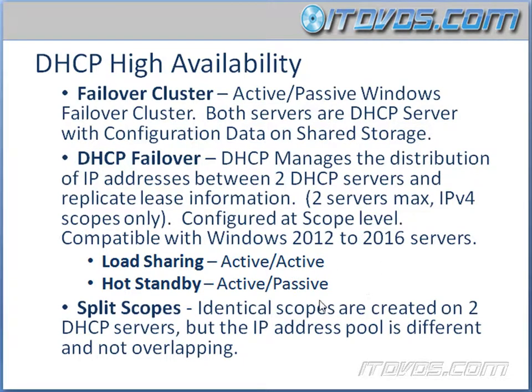The third option is split scopes, where identical scopes are created on two DHCP servers but the IP address pool is different and non-overlapping. There's a wizard to set this up; it uses exclusion ranges so that one DHCP server can only hand out a certain set of IP addresses, and the other DHCP server hands out the rest.